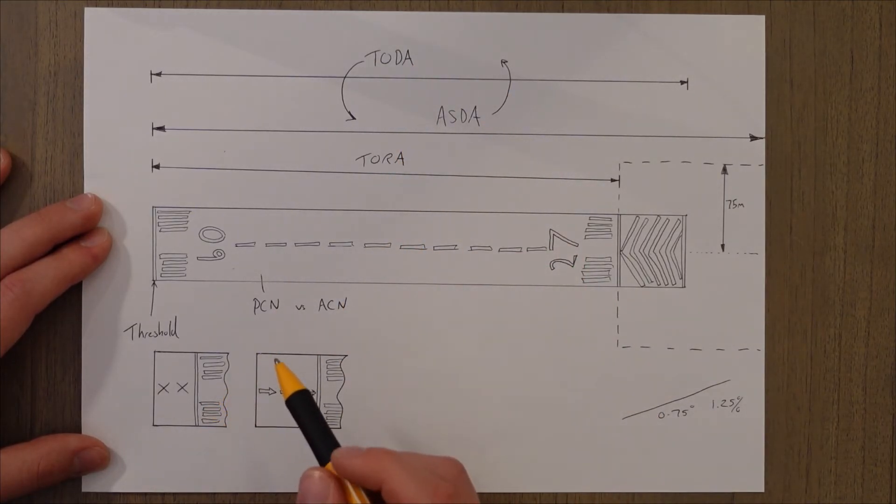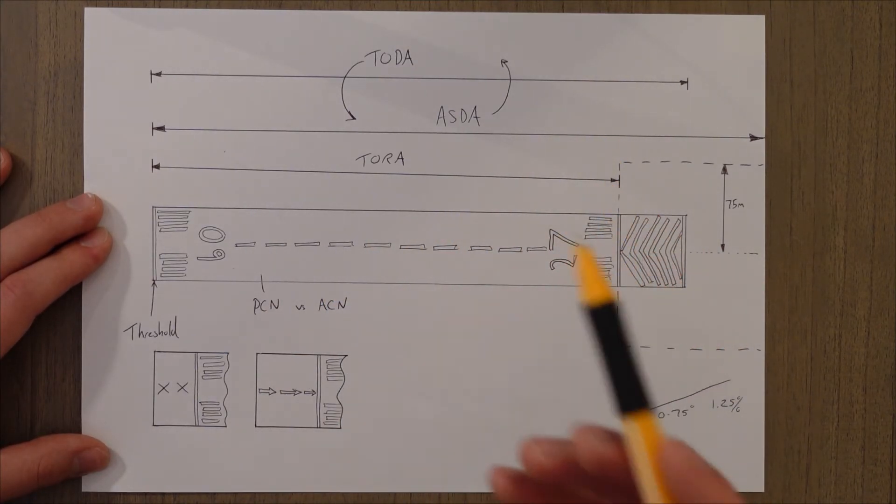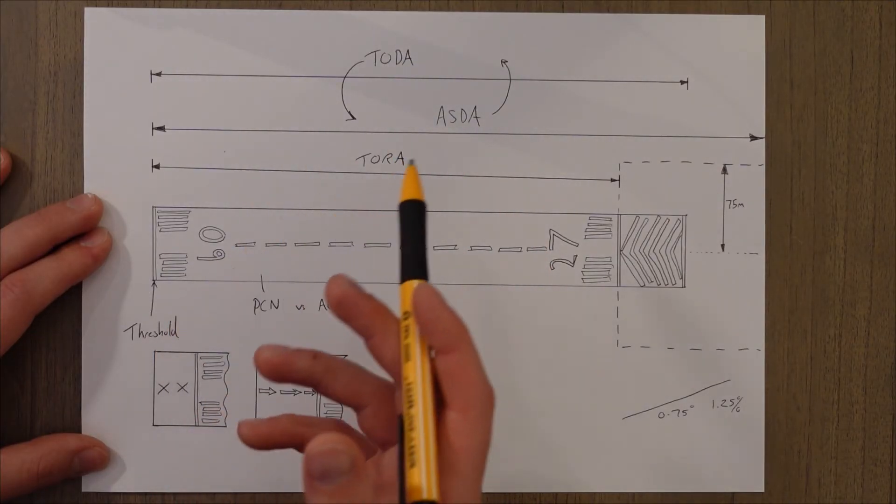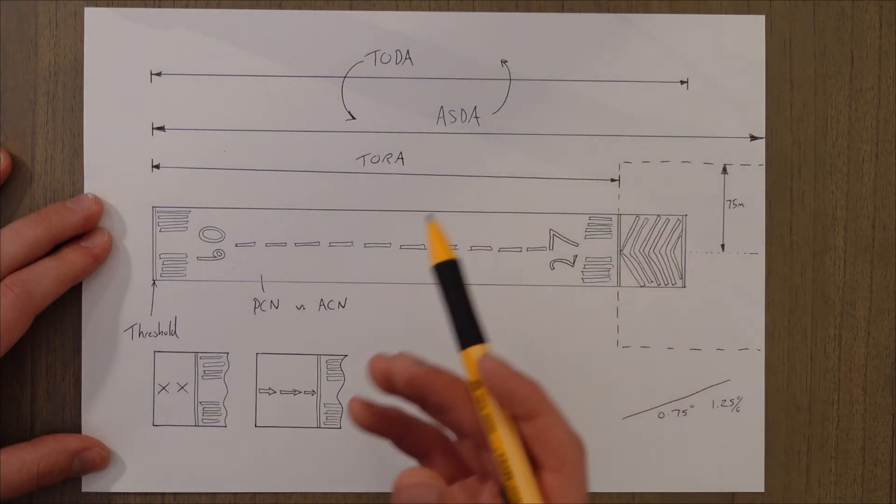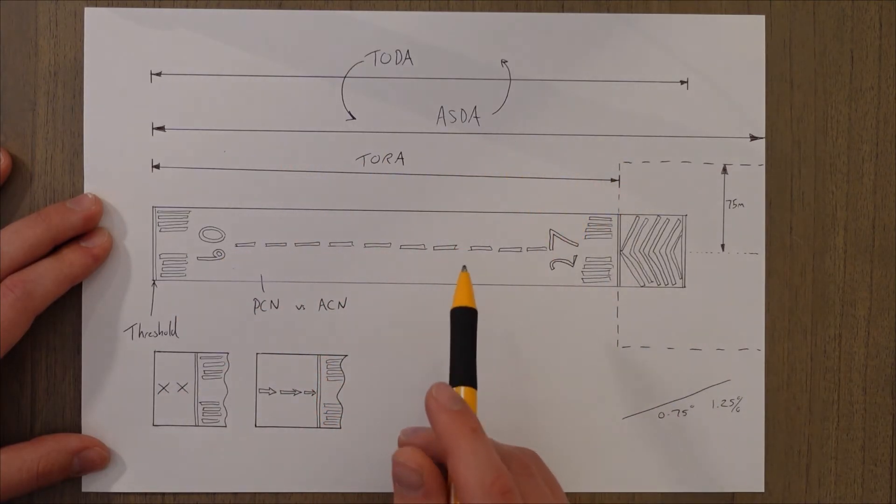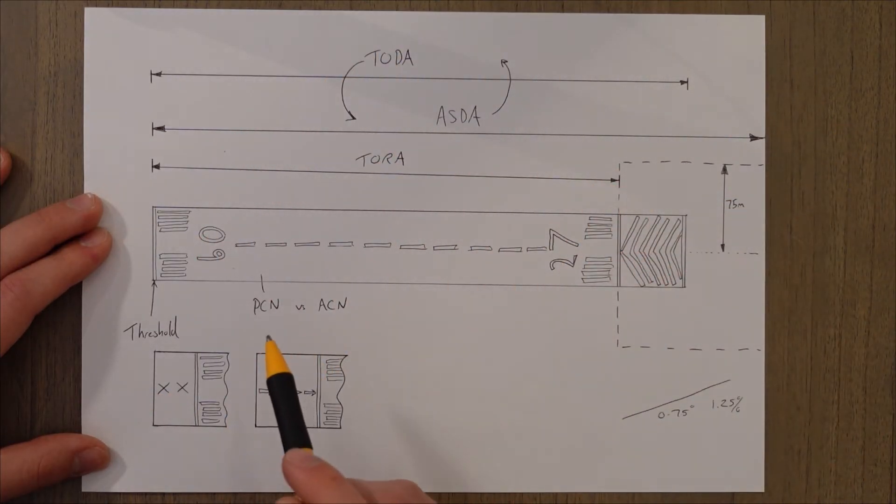If our ASDA and our TODA are the same, then we call it a balanced field, and that makes the takeoff performance calculations a little bit easier because we only need one distance for takeoff and one distance for rejecting a takeoff.